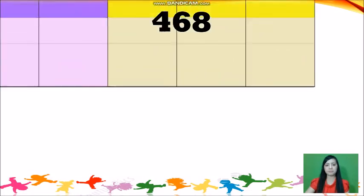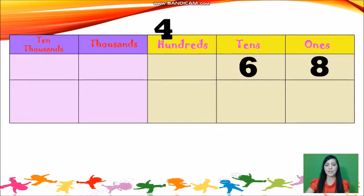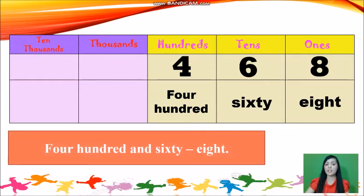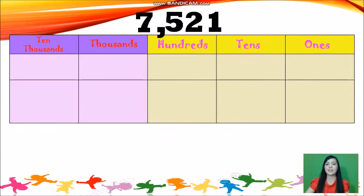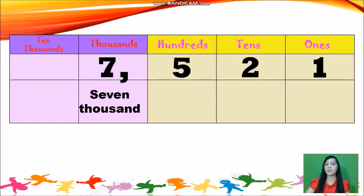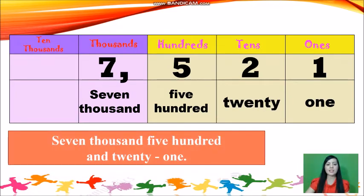Let's have another one. Place value: we have 1s, 10s, 100s, and 10,000s — we are learning until 10,000. The number 8 goes in the 1s place, 6 in the 10s place, 4 in the 100s place. Reading by period: 400, 60, 8 — we can read that as 468. Next: 1 in the 1s place, 2 in the 10s place, 5 in the 100s place, 7 in the 1,000s place. We can read the 1,000s period as 7,000, and the 1s period as 500, 20, and 1 — so that is 7,521. Next: 5 in the 1s place, 9 in the 10s place, 0 in the 100s place, 1 in the 1,000s place. So we can read that as 1,095 — you don't need to read the 0.